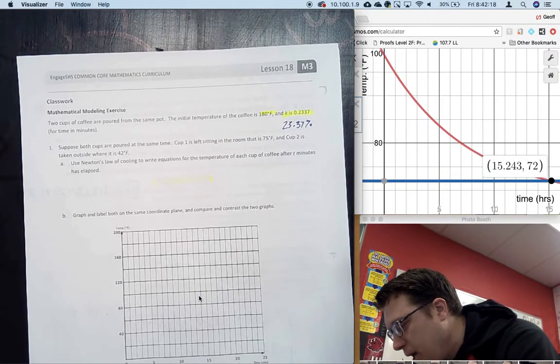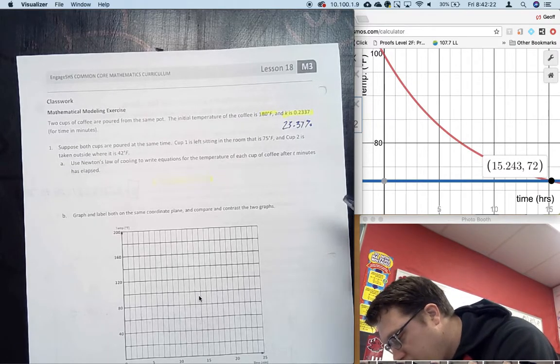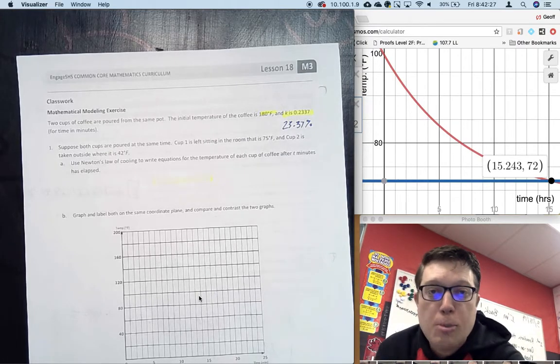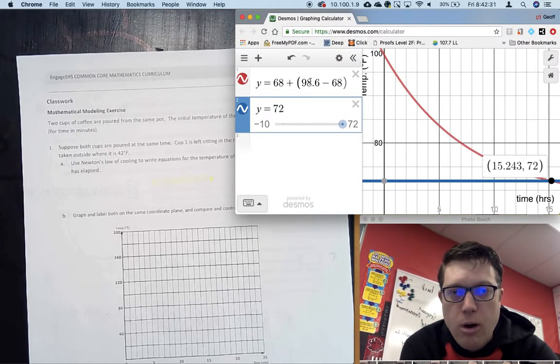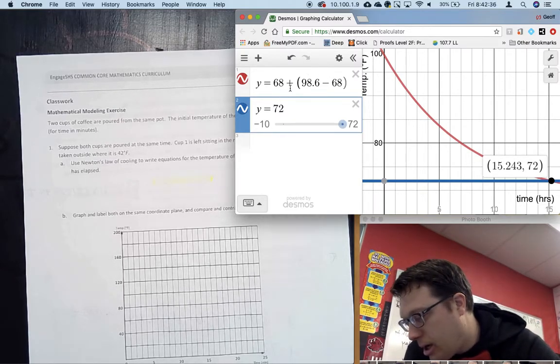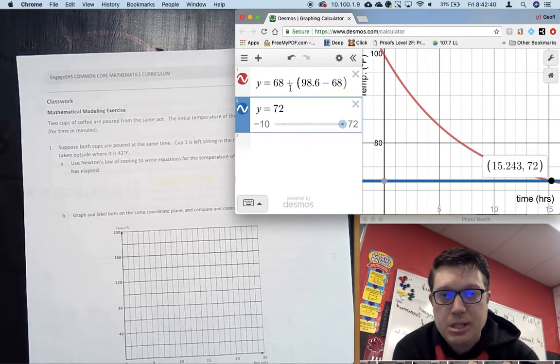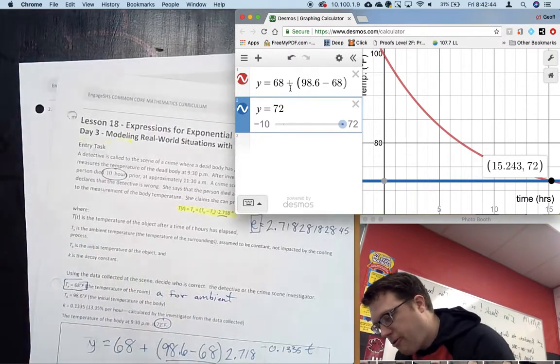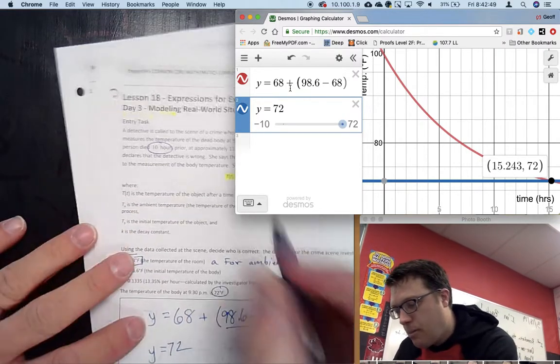Use Newton's Law of Cooling to write both equations. We'll graph them, let Desmos handle some of the graphing capabilities, and determine when the coffee is safe to drink - when it's below 140 degrees. We just need to plug in the 68 appropriately. Formally define T_a, T_0, and K, and then plug it in.